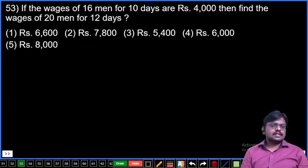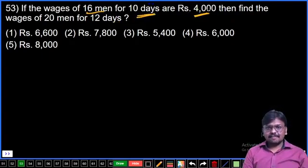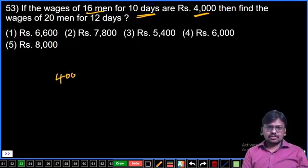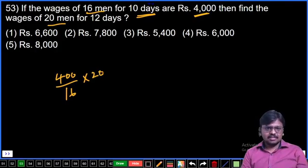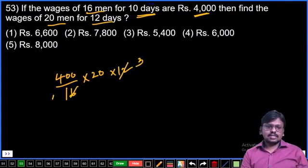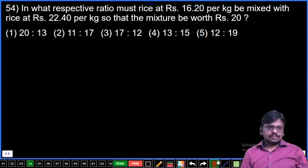Question number 53: If the wages of 16 men for 10 days are Rs 4000, then find the wages of 20 men for 12 days. 16 men, 10 days: 4000. One day: 400. One man, one day: 400 by 16, which is 25. So 20 men times 12 days: 25 times 20 times 12. 3 times 4 is 12, 4 times 4 is 16. Then 3 into 20 is 60, 60 into 100 is 6000. Fourth option.